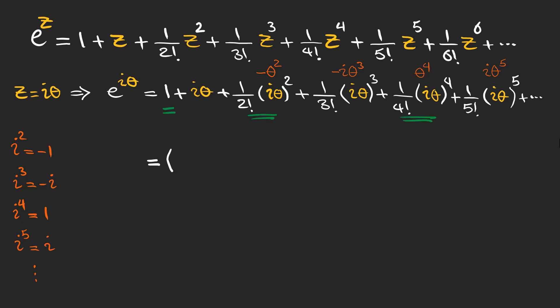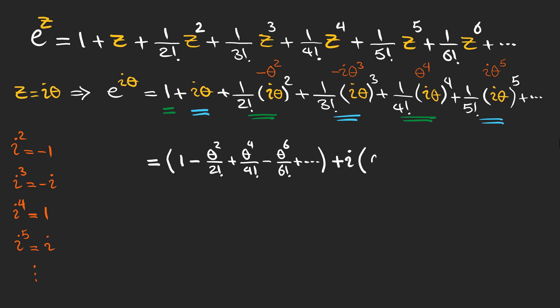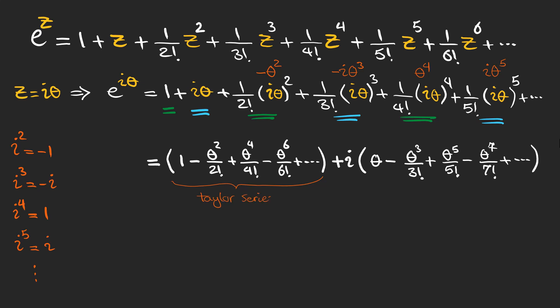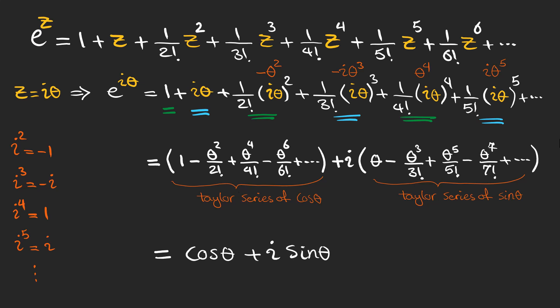The real terms can be grouped together in one parenthesis, and the imaginary terms factored with i in another. We recognize that the first group is the power series of cosine theta and the second is the power series of sine theta. So we can write the whole expression as cosine theta plus i sine theta — this is how we connect trigonometric functions to exponential functions.